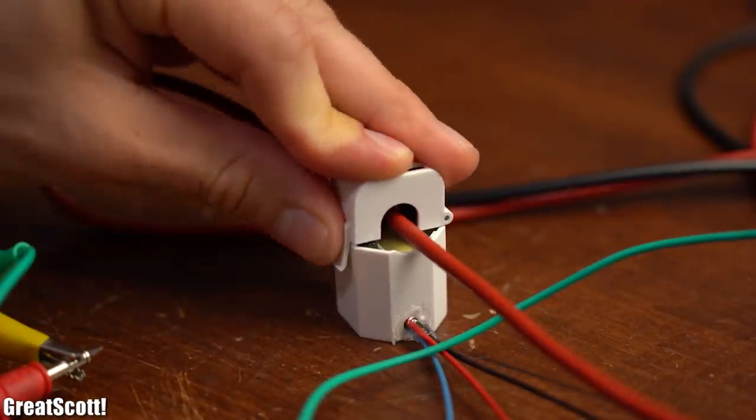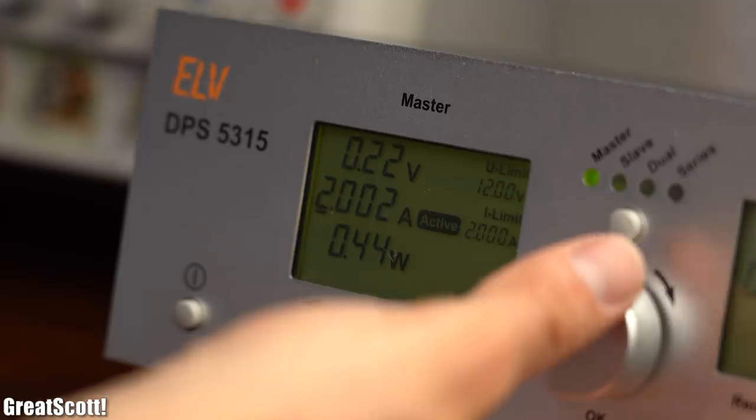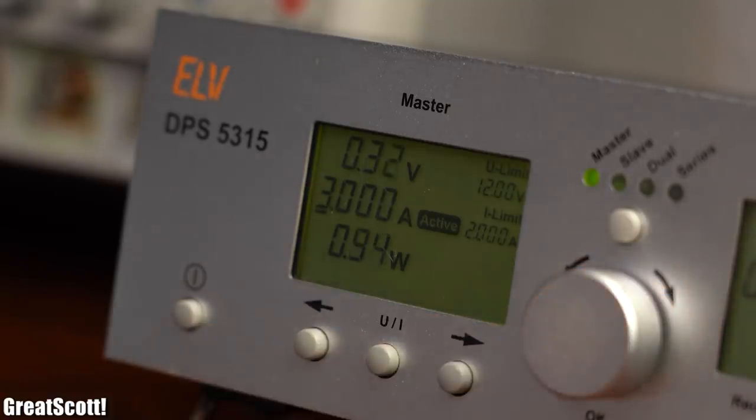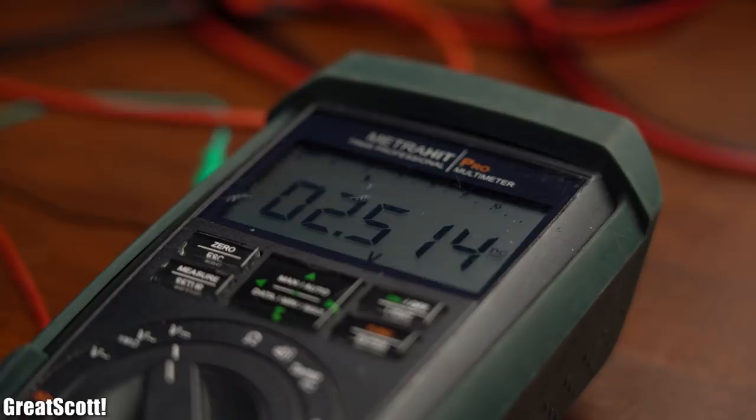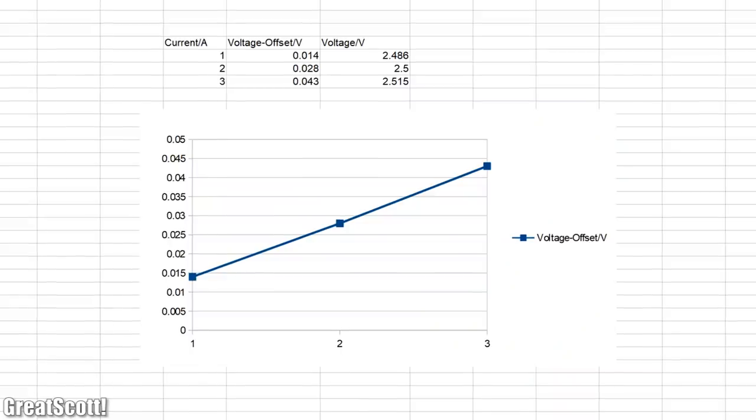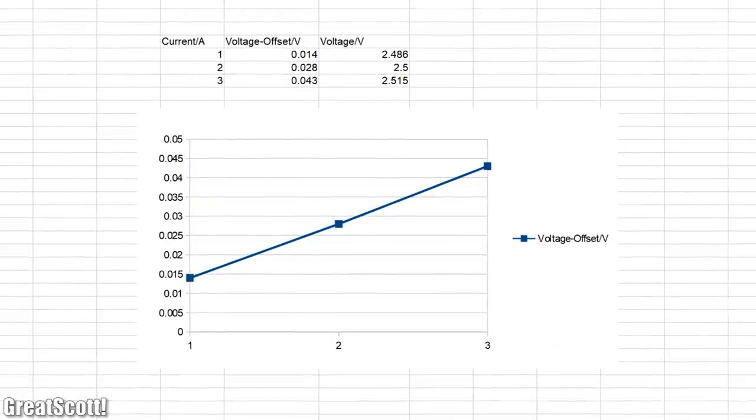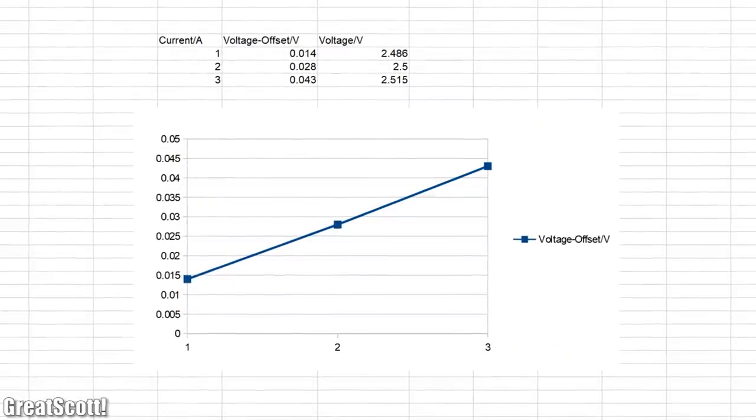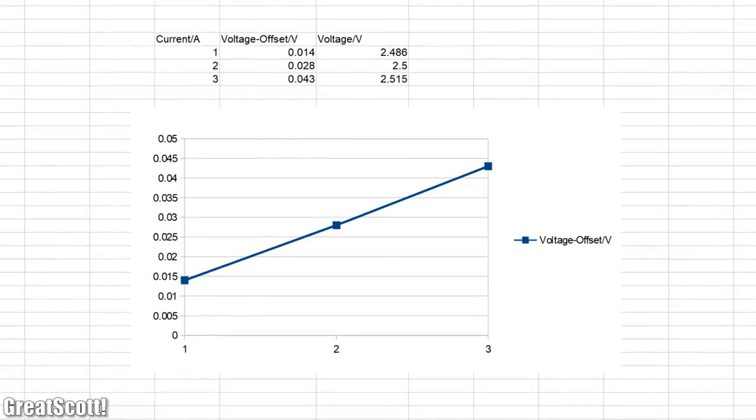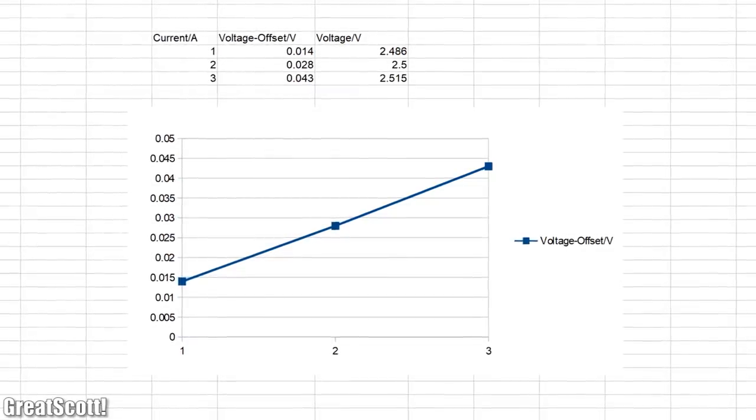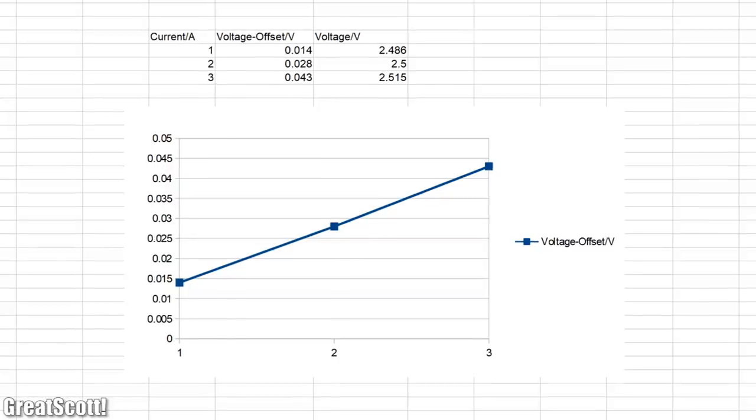So I let a constant current of 1, 2 and 3A flow through its core while writing down the output voltages. And if we remove the offset voltage of 2.472V then we can see that we got a pretty linear relation between those output values. Great!